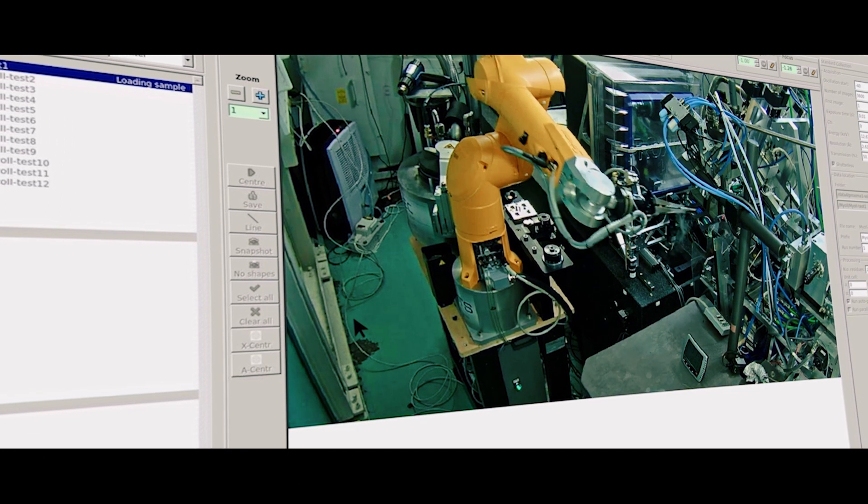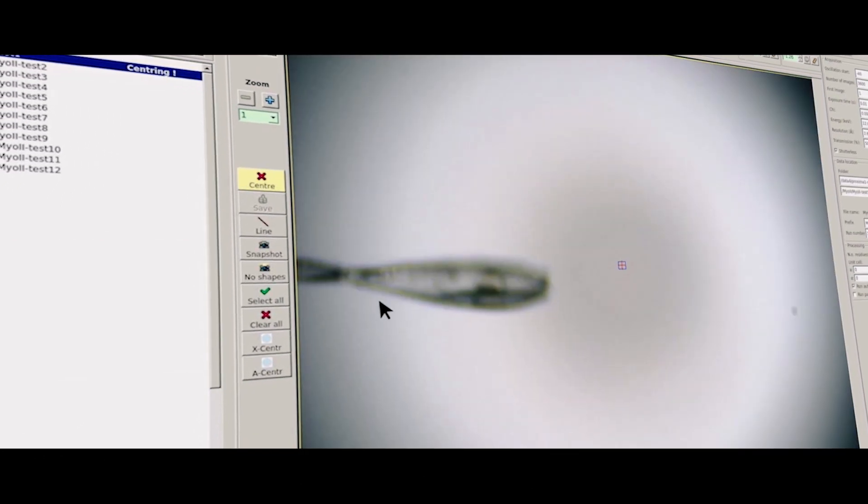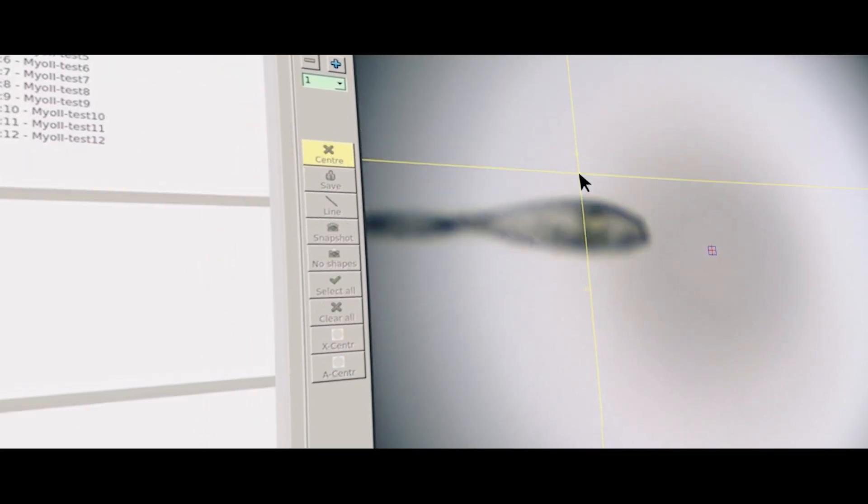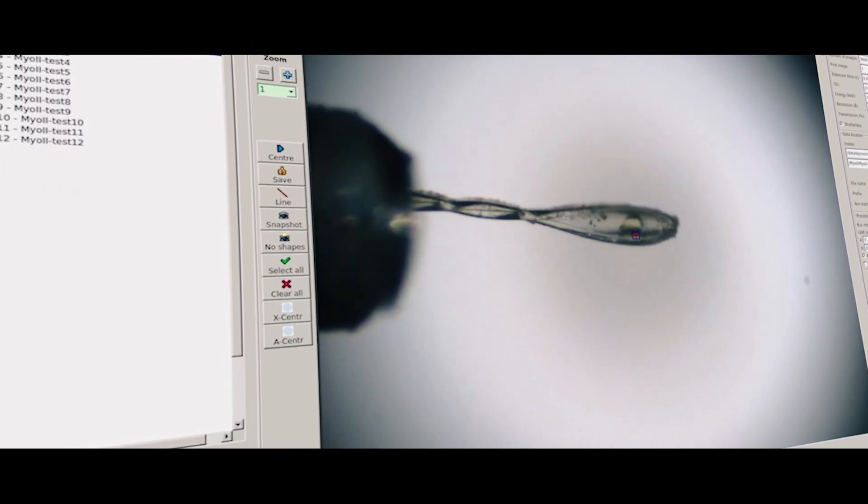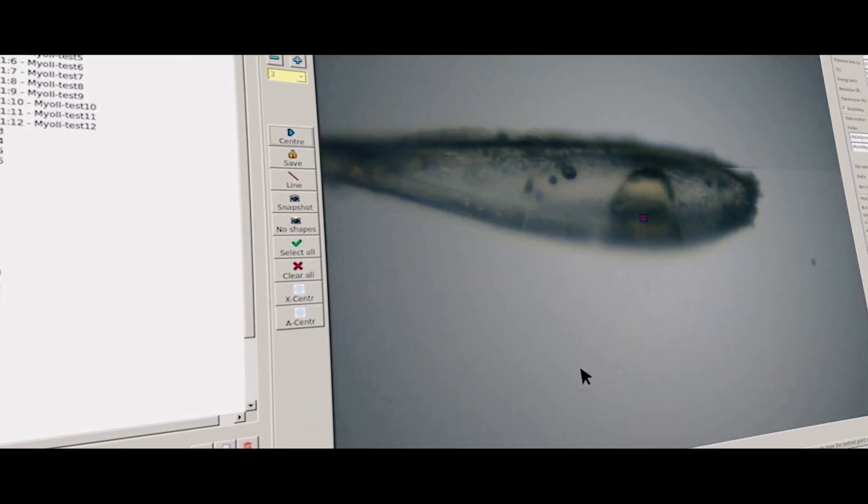Together with many other European synchrotrons, Proxima beamlines are involved in the MXCuBE and ISPyB collaborations and use the MXCuBE v2 control interface and the ISPyB v3 database.